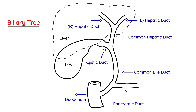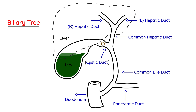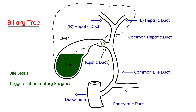Cholecystitis occurs when you have a stone in the cystic duct. That stone blocks the outflow of bile — shown in green because bile is green. When bile cannot flow outward, you get bile stasis, meaning it stays in one place, which can trigger the release of enzymes that cause inflammation. That is essentially how cholecystitis happens.